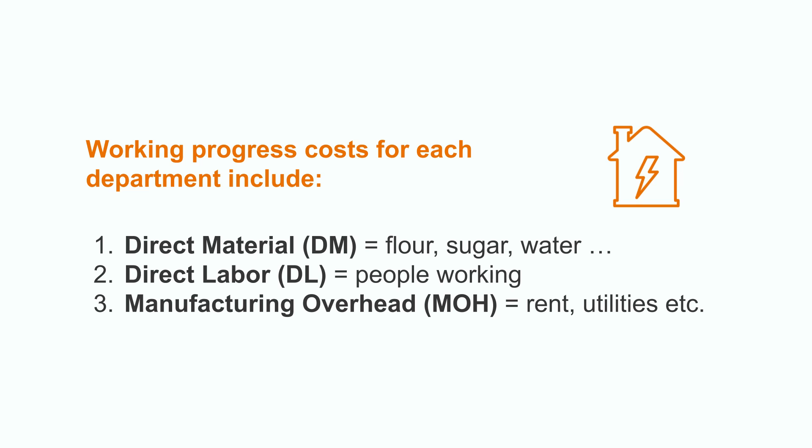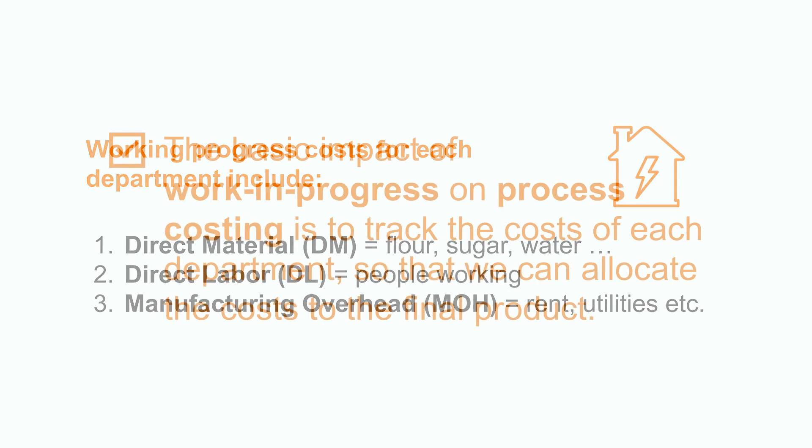Each department's cost, which is also called the work-in-progress cost, has to be tracked so that we can allocate it to the finished product, the bread. Therefore, the basic impact of work-in-progress on process costing is trying to track the cost of each department so that we can allocate the cost to the final product. Please feel free to explore the impact of work-in-progress on your own or check out more on this topic.